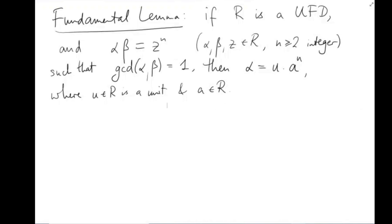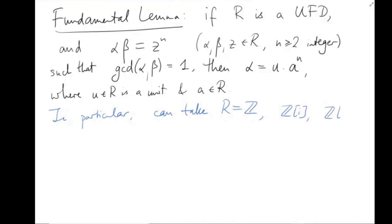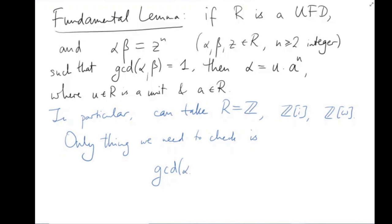In particular, this lemma applies for equations like α·β = z to the N whenever we're working inside rings like Z, or Z adjoin i, or Z adjoin omega, because these are all UFDs. All we need to check is that the greatest common divisor of α and β is 1.